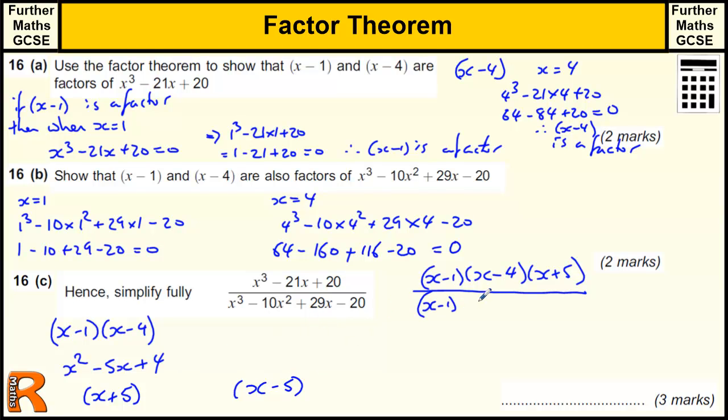So we've got x plus, x minus 1, x minus 4, x minus 5. So these cancel to leave us with x plus 5 over x minus 5. Don't be tempted to go any further with that, because that's as far as it can go.